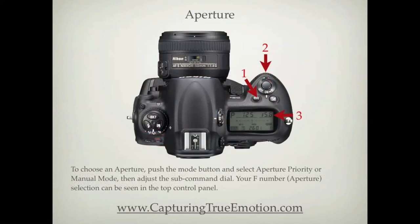To choose an aperture, push the Mode button and select Aperture Priority or Manual Mode, then adjust the F number. Aperture selection can be seen in the top control panel.